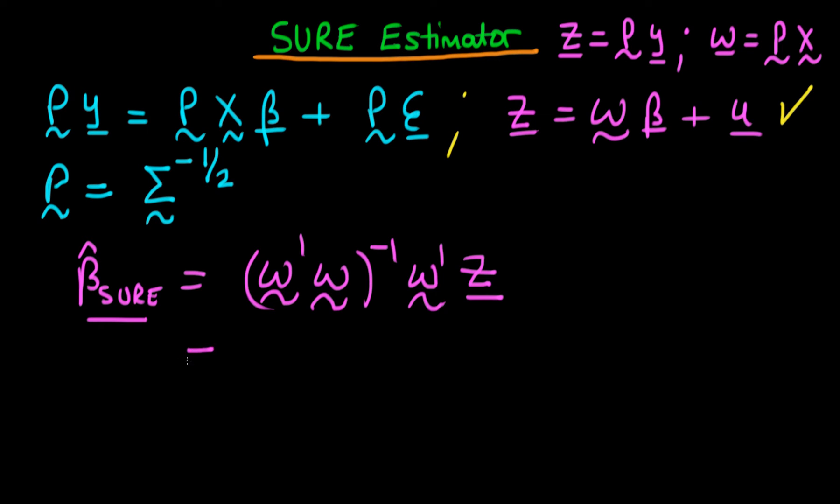But because we have actually created these variables artificially, we can now substitute back for what these things are in terms of P, X and Y. So omega prime is going to be equal to X prime times P prime, because when you take the transpose of a product, the order of multiplication reverses. So it's that times omega, which is just P times X, and it's that all inverted, times omega prime, which is X prime times P prime times Z, and Z is just equal to P times Y.